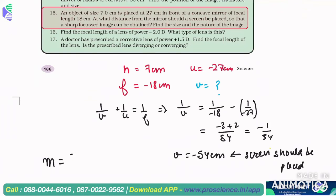That is minus v by u, minus of minus 54 by u is 18, sorry u is 27, minus 27. That comes out to be magnification is minus 2.